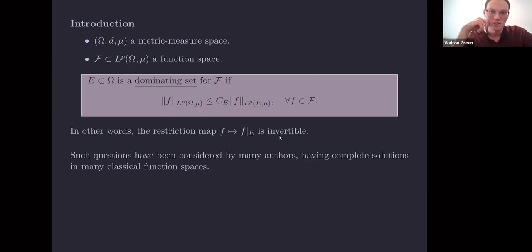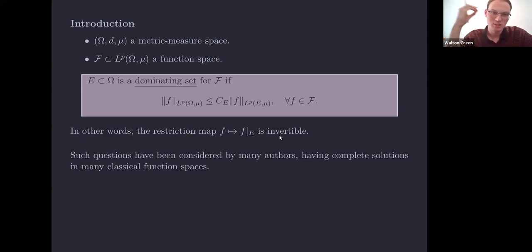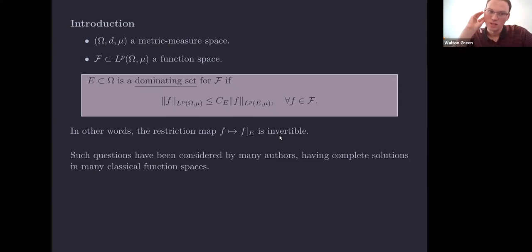E is a subset of Omega, so there must be some structure on script F for such an inequality to hold. These questions have been considered by many authors and they have complete solutions in classical function spaces like the Hardy space, certain Paley-Wiener spaces, and certain Bergman spaces.